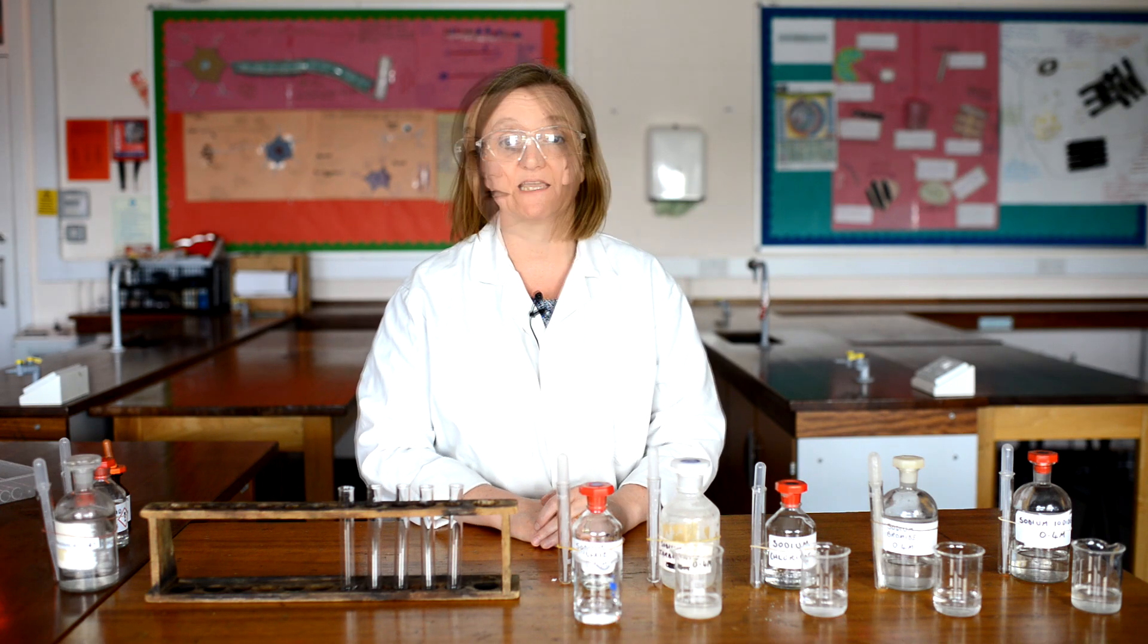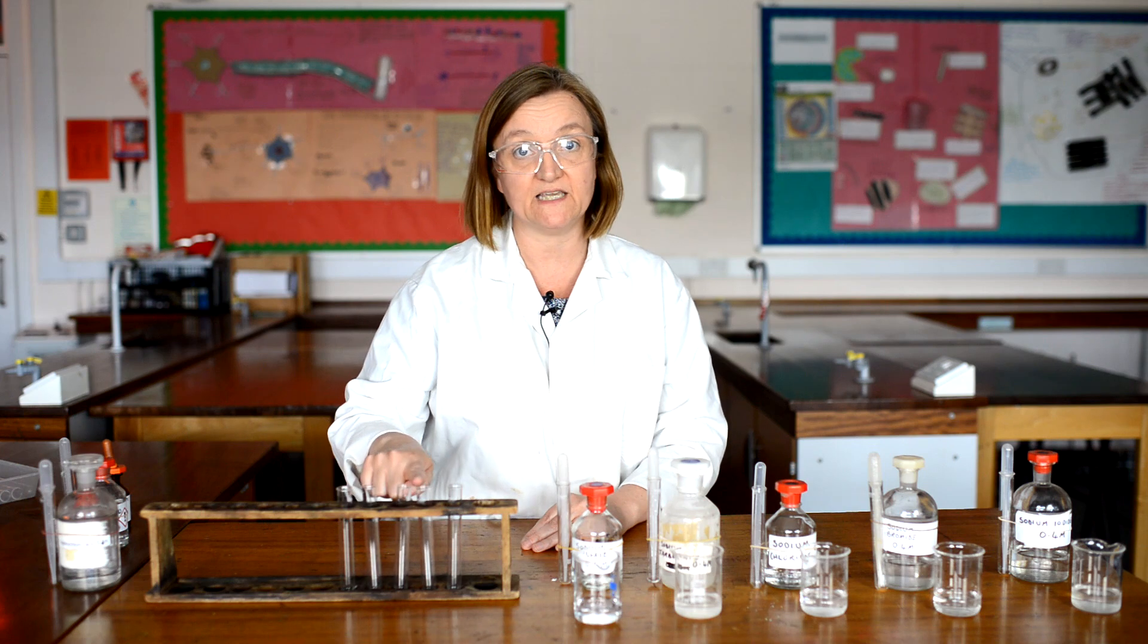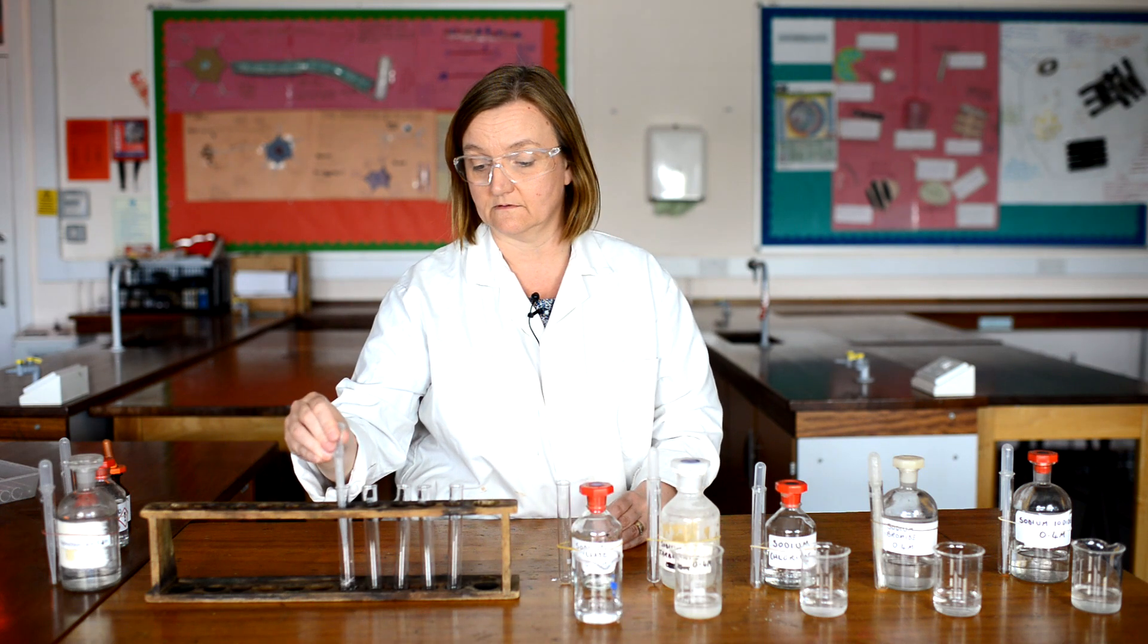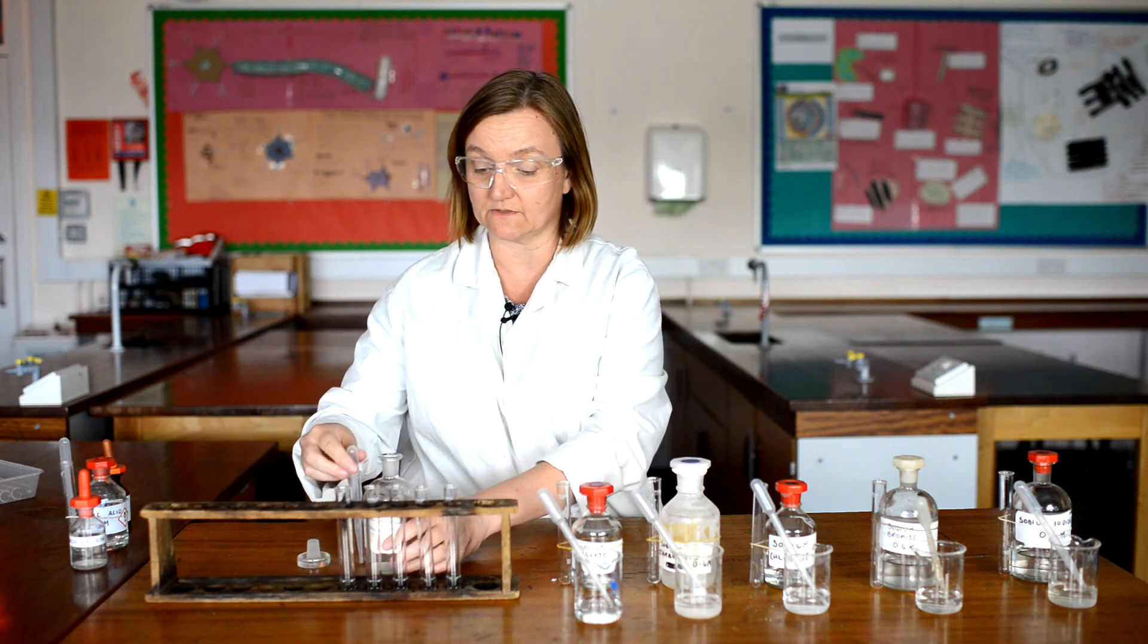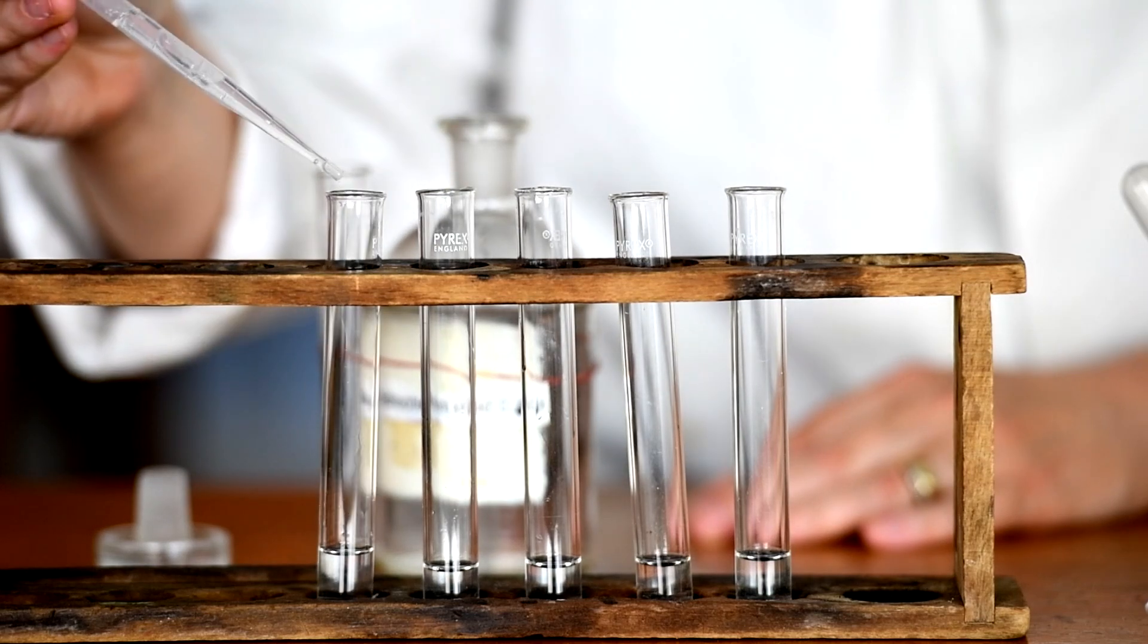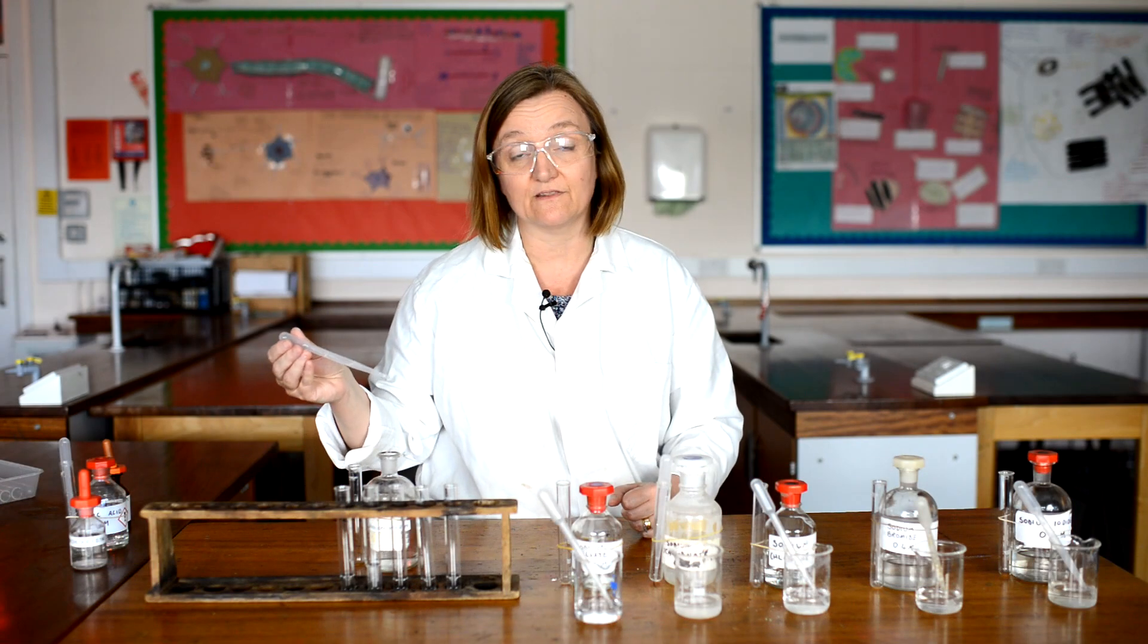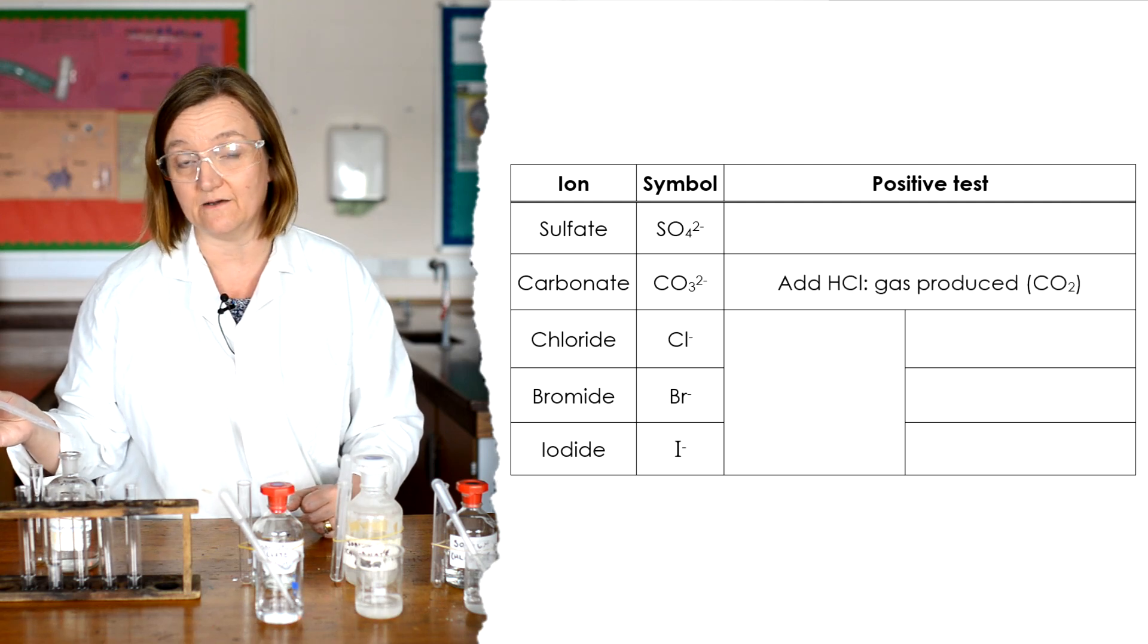So we're going to start by testing with hydrochloric acid. So I've got my five test tubes here, and I'm going to put a little bit of each of the solutions in the five test tubes, in this same order. So starting with the sulphate. So I'm going to start by adding some hydrochloric acid to each of these solutions. So let's watch carefully to see what happens. So first of all, hydrochloric acid in sodium sulphate. Not a lot. So now hydrochloric acid in sodium carbonate. Oh, do you see that fizzing? Now that is carbon dioxide gas being produced. So hydrochloric acid can be used as a test for carbonate ions in solution.